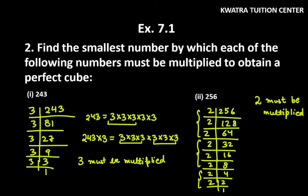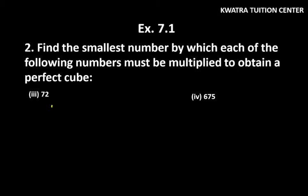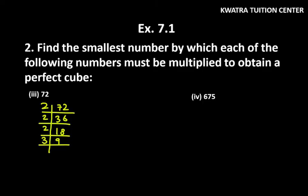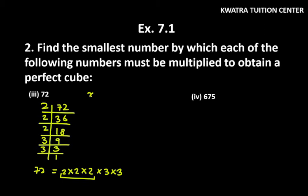Let's move on to the third part. The third part is 72. 72 is divisible by 2, so you get 36. 36 divisible by 2, you get 18. 18 divisible by 2, you get 9. 9 divisible by 3, you get 3, and 1 at the bottom. So 72 can be written as 2 × 2 × 2 × 3 × 3. The pair of 2s is complete in a group of three, but 3 is not. So you have to multiply 3 to make it a perfect cube. Therefore, 3 must be multiplied.